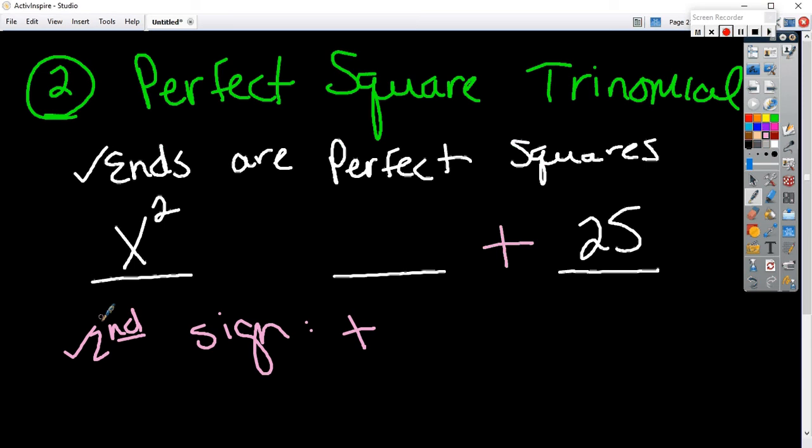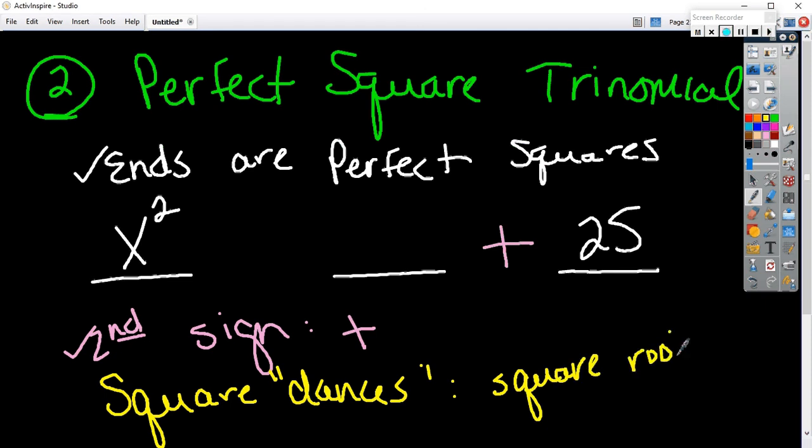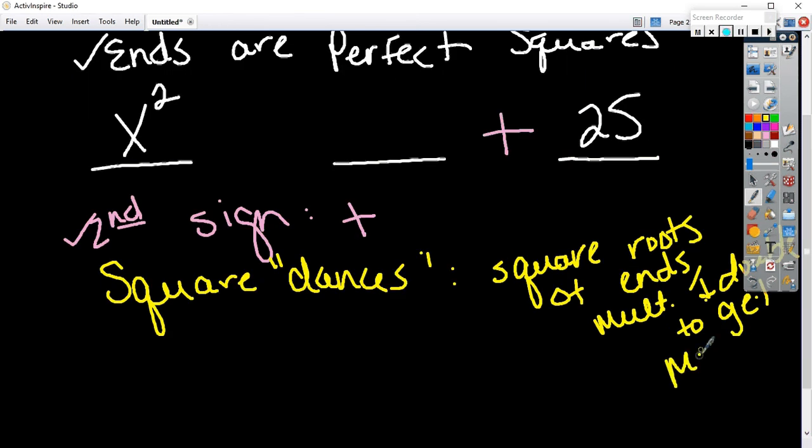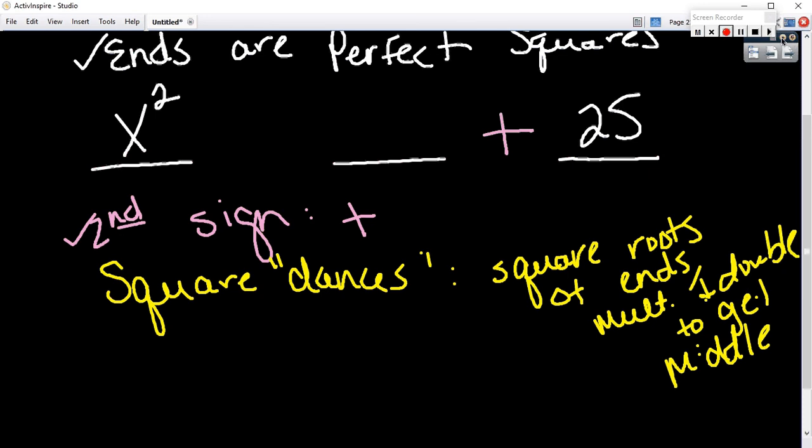The last criteria is the hardest that you have to find. Miss Wilson calls it a square dance. You take the ends, square roots of the ends, multiply and double to get the middle term. I know that's a lot, but I'll explain it to you as soon as y'all finish writing that.